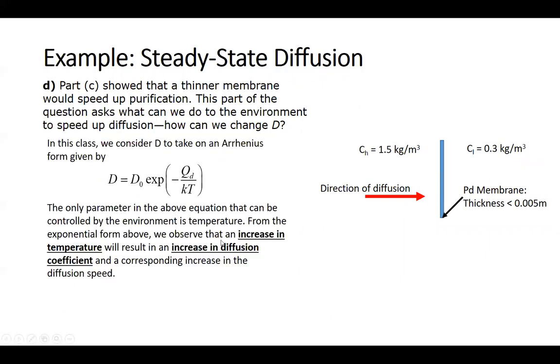From the exponential above, we can observe that an increase in temperature is going to result in an increase in the diffusion coefficient and a corresponding increase in the diffusion speed. So if you want to speed up diffusion, then you raise the temperature. That's all that there is for this example, and that concludes the steady state diffusion discussion.